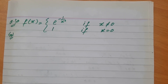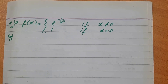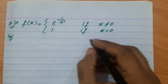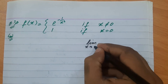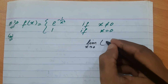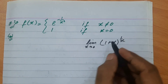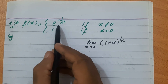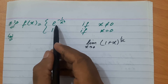अब Question 30 — यहाँ बताना है x=0 पर continuous है या नहीं। पिछले Questions 27, 28, 29 की तरह यहाँ limit x→0 (1+x)^(1/x) वाली form नहीं है। इसलिए direct limit apply नहीं करेंगे — left और right limit वाला method use करेंगे।